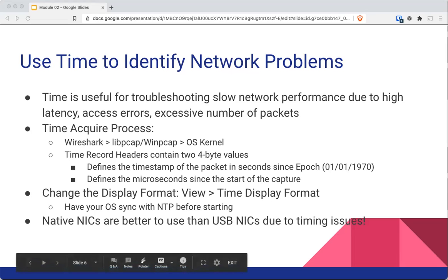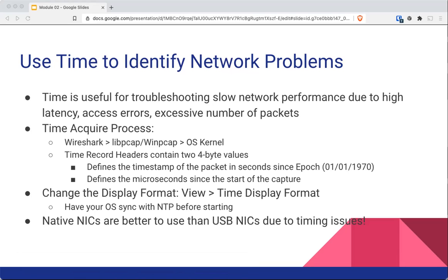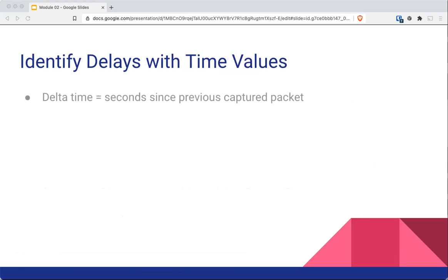Within the time display format you have quite a number of settings: day and time, settings since epoch, seconds since beginning of capture, since previous capture packet, previously displayed packet, and UTC. You will see the term delta time used a lot. This is seconds since the previous capture packet. So if you have two packets, delta time on packet two is determined by when packet one happened. If you have 100 packets, packet number 59's time will be based off of packet zero.